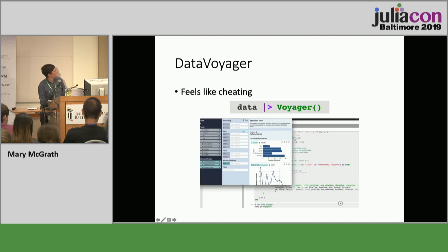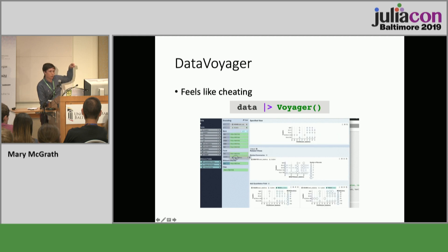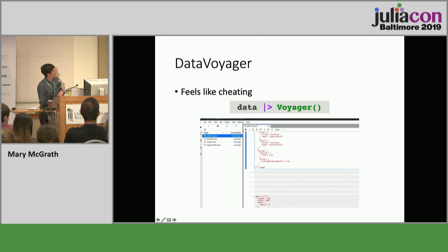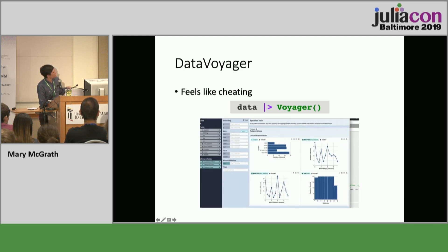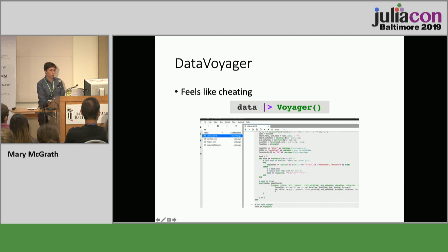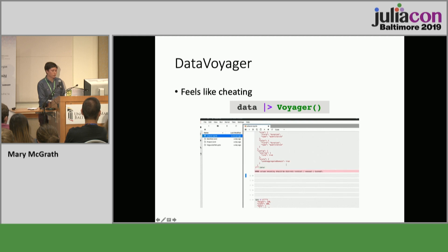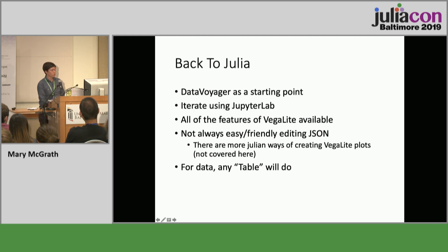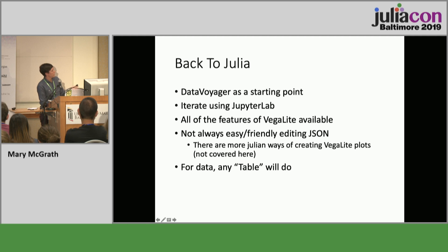And then I throw it to DataVoyager — this is basically cheating. I just throw this line of code in there, and I'm using Jupyter Notebook with DataVoyager. I've got a GIF showing that you get your data, you get to drag and drop, you get to explore, and it recommends options for you. I'm selecting data, you can see it's populating things in the bottom, playing around, trying a couple different things, adding more features. Then I copy it and move it straight into iJulia, add in a couple of quick keywords, and then I have a plot. This is a really great starting point for any visualization — a quick start. Then you can iterate using JupyterLab. The one downside is that this is basically editing JSON text, which is not always the most fun. There are more Julian ways of doing this, and I definitely recommend checking them out.